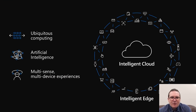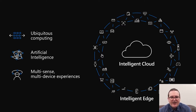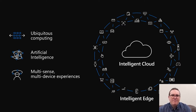A key enabler for mixed reality is the intelligent cloud. The intelligent cloud provides distributed compute that can be accessed through mobile devices at what we call the intelligent edge, and mixed reality devices like the HoloLens is an example of an intelligent edge device. We're able to take all of the different sensors that we embed into the HoloLens and couple that with the power that we have in our intelligent cloud compute.